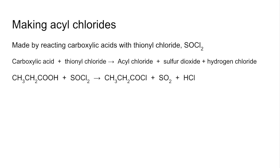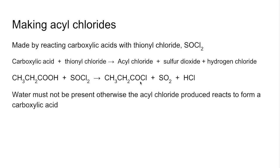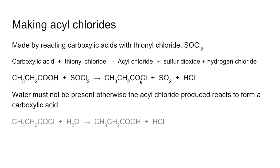A specific example: propanoic acid reacting with thionyl chloride making propanoyl chloride. It's really important that water is not present because acyl chlorides are very, very reactive. They're going to react with any water present and give you a carboxylic acid back. So obviously if you want to make the acyl chloride you need to keep water out. The equation for that: propanoyl chloride plus water gives propanoic acid and hydrogen chloride.